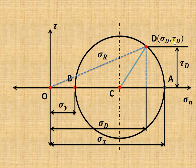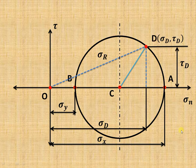This line segment represents the resultant stress acting at point D. So at point D we have Sigma D, the normal stress, represented by the horizontal line segment; Tau D, the shear stress, represented by the vertical line segment; and the resultant stress represented by the diagonal line segment from O to D on the circle. The most important point is that this angle is 2 theta.